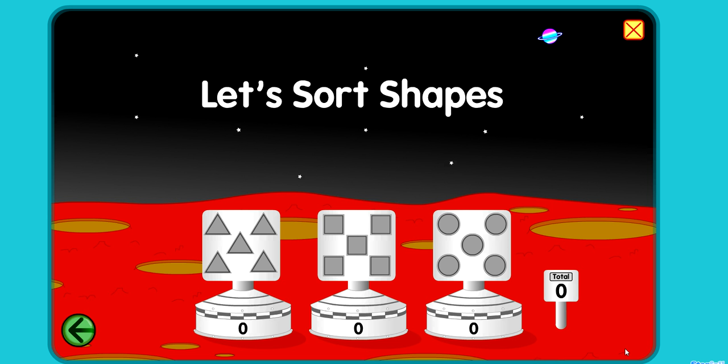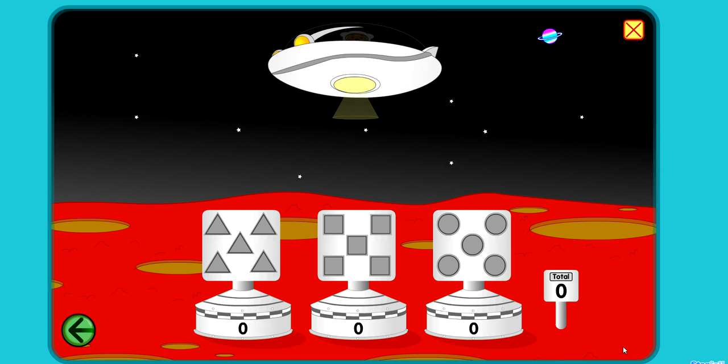Let's sort shapes. One square. One triangle. One circle. Two circles. Two triangles. Three circles. Two squares. Three triangles. Four circles. Five circles. Five circles.